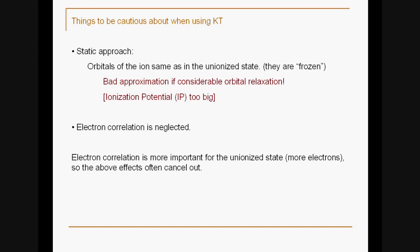There are things to be cautious about when using Koopmans' theorem. First, it's a static approach, which means orbitals of the ion are the same as in the unionized state - they are frozen because we haven't done a separate Hartree-Fock calculation on the ion. This is a bad approximation if there's considerable orbital relaxation once you kick out the electron, and it will give you an ionization potential which is too large.